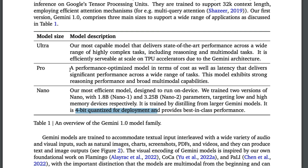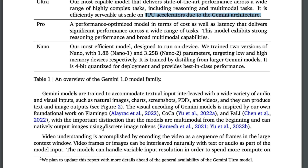The Pro model is almost the GPT-3.5 Turbo equivalent, optimized somewhere between Nano and Ultra. The Ultra is their biggest and most capable model. The Ultra models are trained on Google's in-house TPUs — Tensor Processing Units — which is Google's own custom computation hardware.